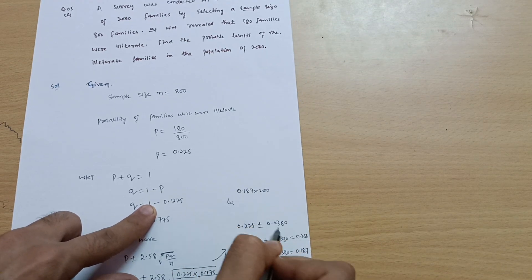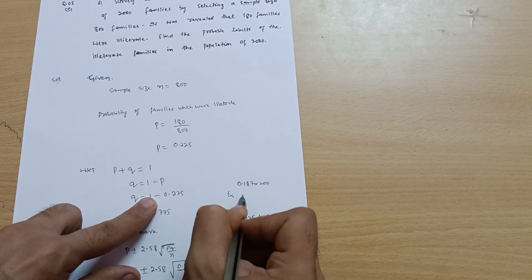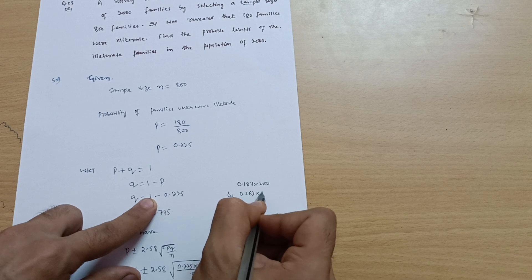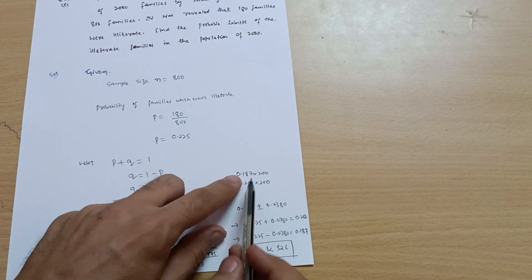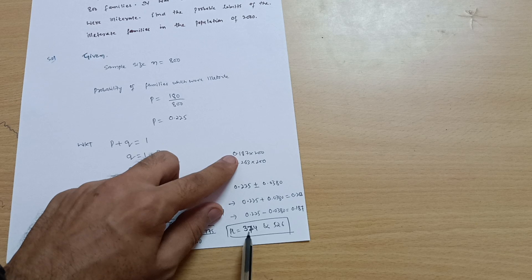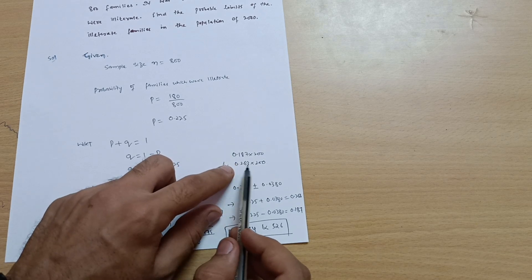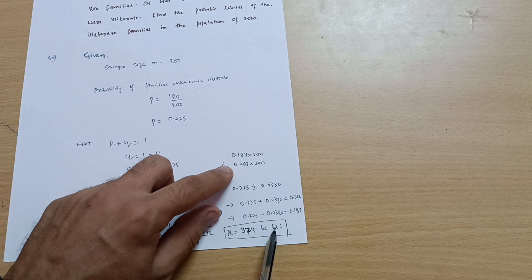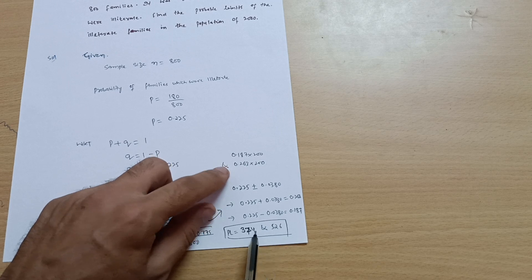So you will get 0.187 multiplied by 2000, you will get 374, and 0.263 into 2000 you will get 526. This is the range of the illiterate families out of 2000 families.